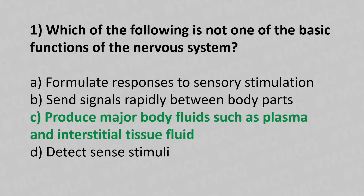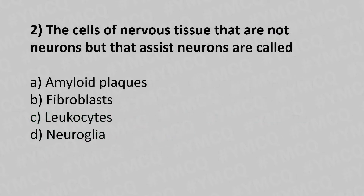Question 2: The cells of the nervous tissue that are not neurons but that assist neurons are called — Option A: amyloid plaques. Option B: fibroblast. Option C: leukocytes. Option D: neuroglia. The answer is Option D — neuroglia.